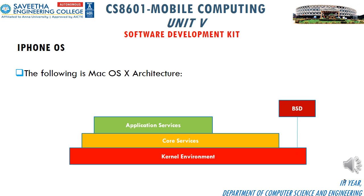The BSD layer, or Berkeley Software Distribution layer, is the derivative for Unix. This part of the kernel is in charge of maintaining system security and permissions. This layer acts as an administrator.